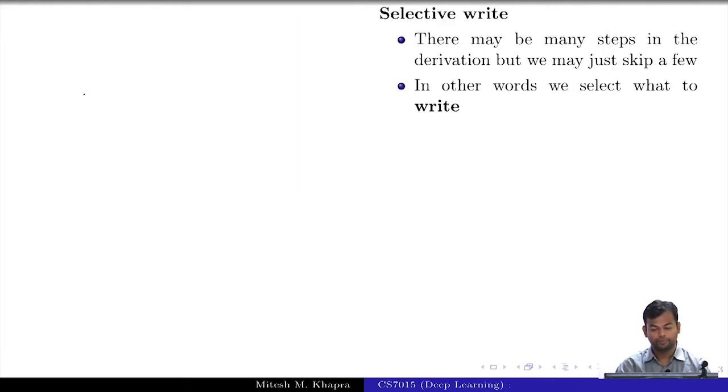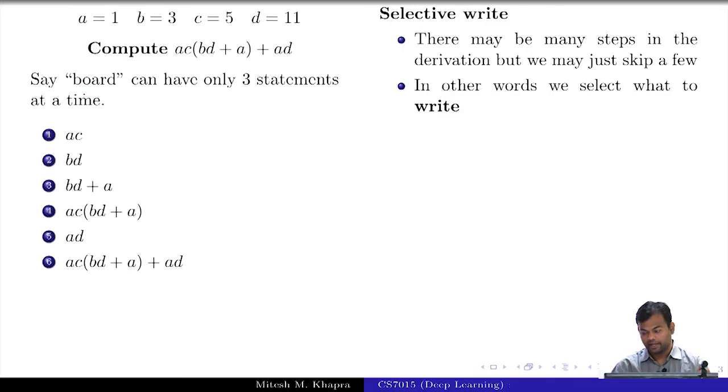First we look at selective write. This is my problem, this is the derivation that I want to do on the board and I have a very small whiteboard which allows me to write only three steps. I am giving the values of a, b, c, d and I want to compute this expression ac(bd + a) + ad. Now, the first thing that I am going to compute is ac. That makes sense, because that is the first term that I need. So I will write ac = 5. And the second thing I will write is bd = 33.